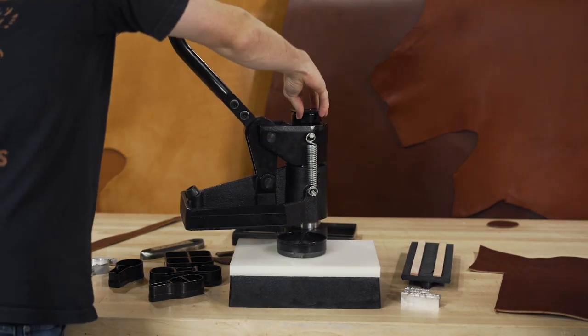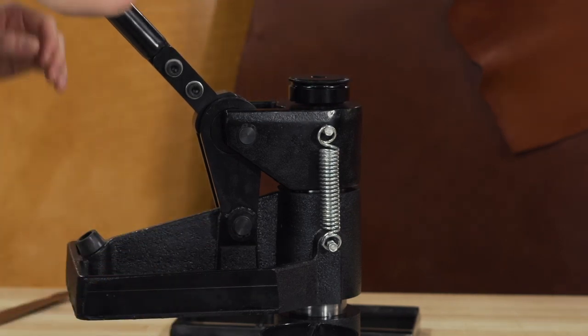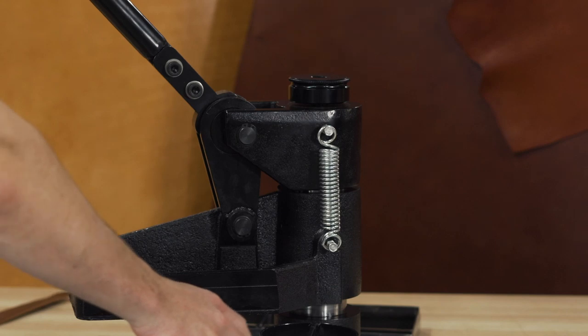If you are using a thinner die, you just rotate this counterclockwise and that's going to move the head downwards so that when you click to the bottom, it'll make contact with the die.